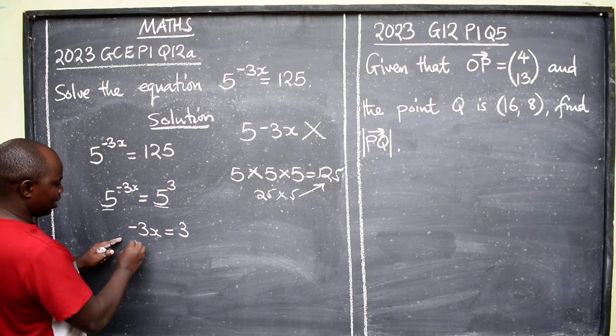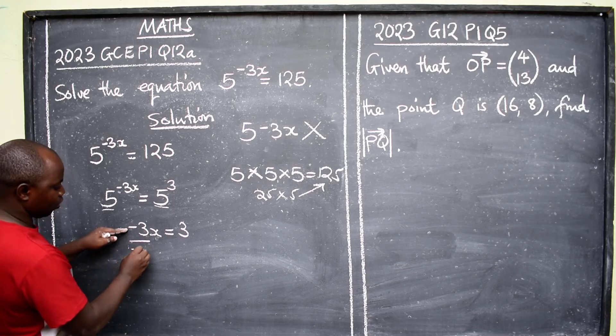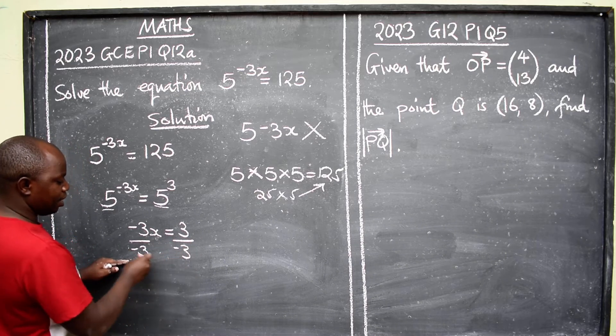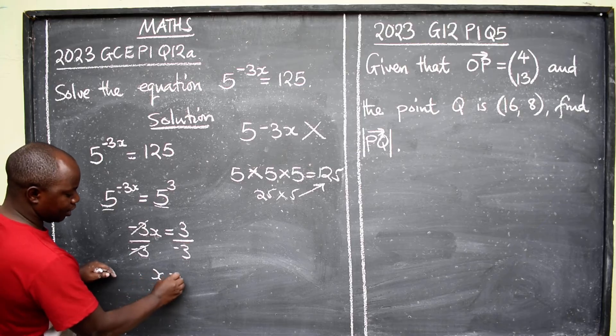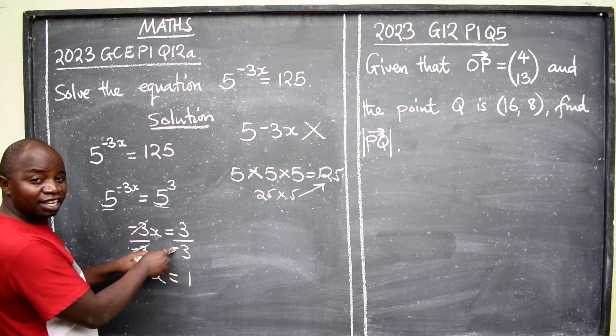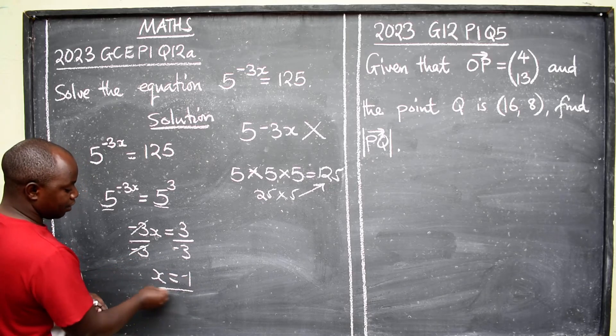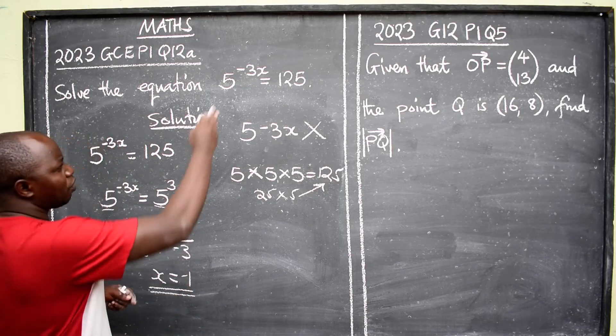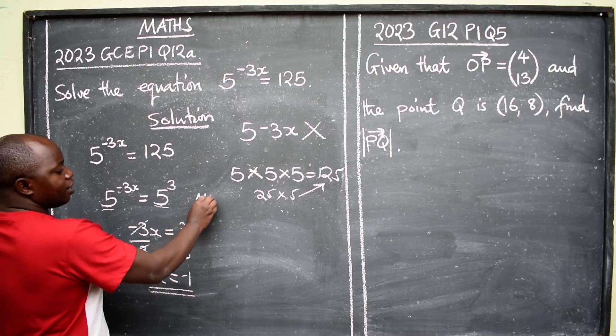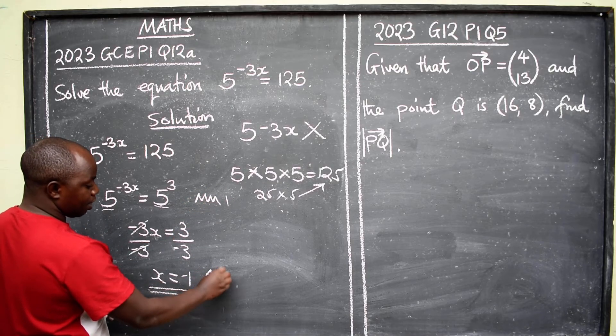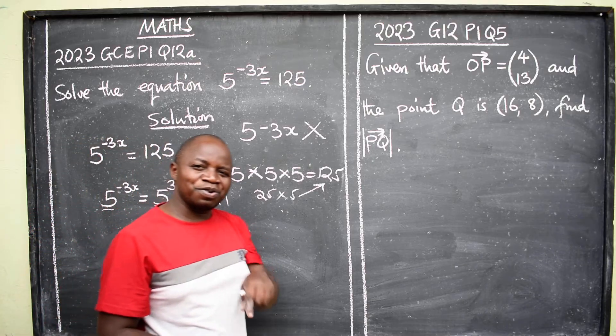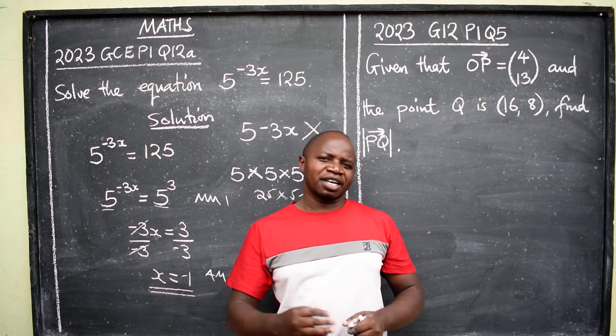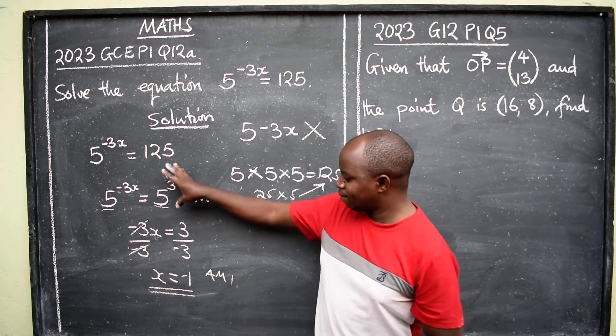To remain with x, divide by negative 3 because we don't need negative 3. Negative 3 cancels. You remain with x is equal to 3 into 3 is 1. There is a negative here, remember, put a negative. So this is the correct answer: x is equal to negative 1. So the two marks will be able to give you the method mark 1 and also answer mark 1.